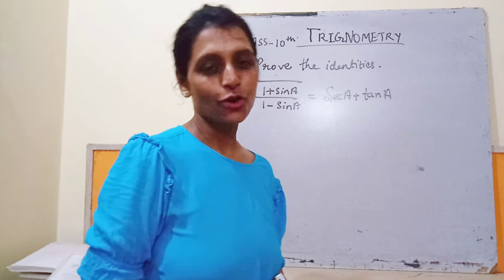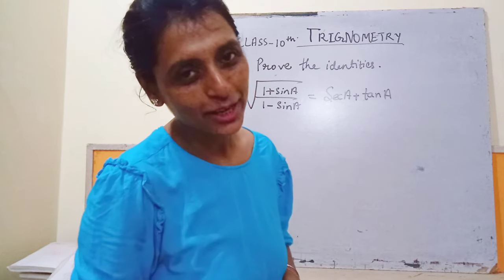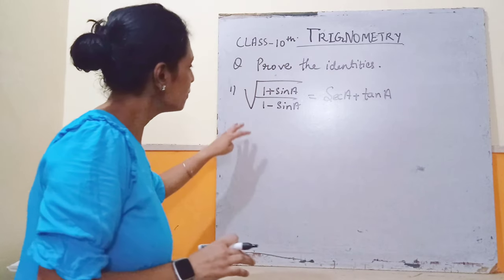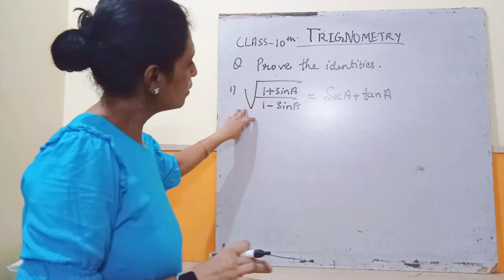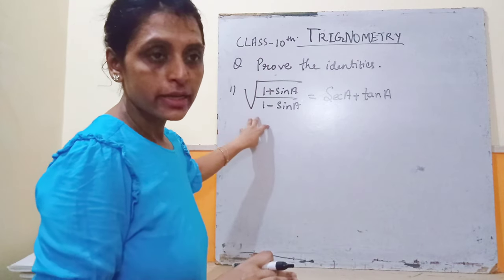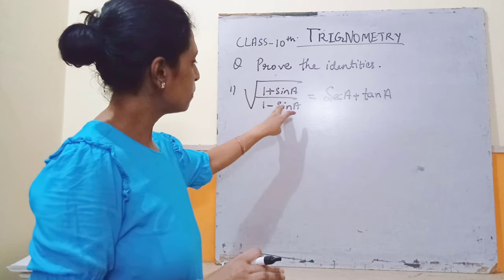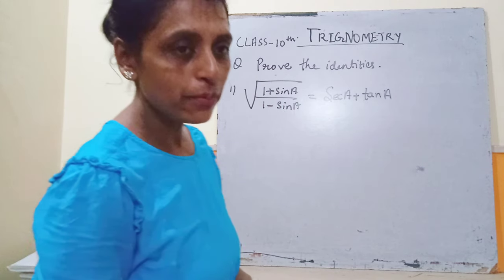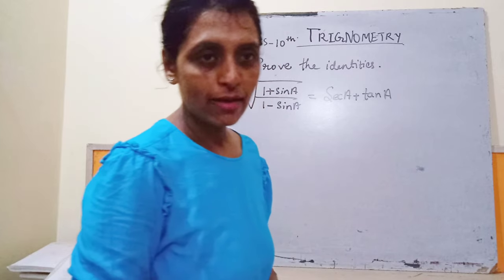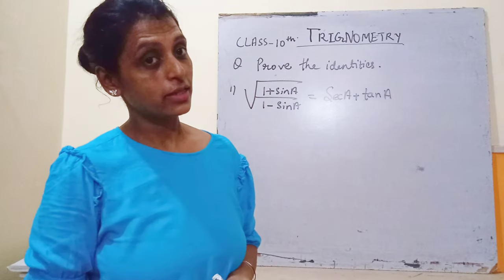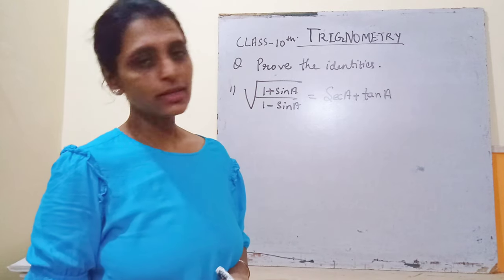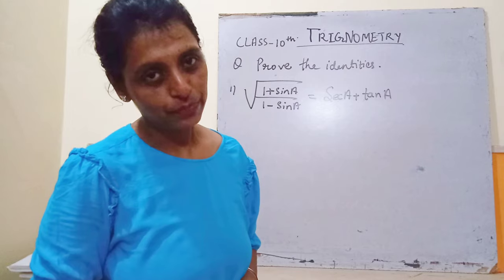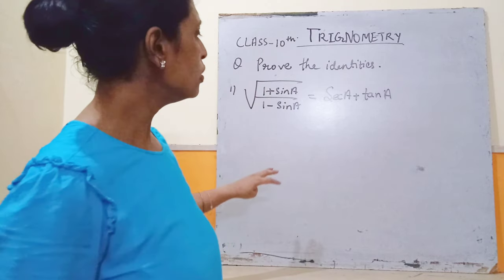I'm going to explain some of the identities here. The given expression is: under root of (1 + sinA) upon (1 - sinA), and we have to prove that it is equal to secA plus tanA.